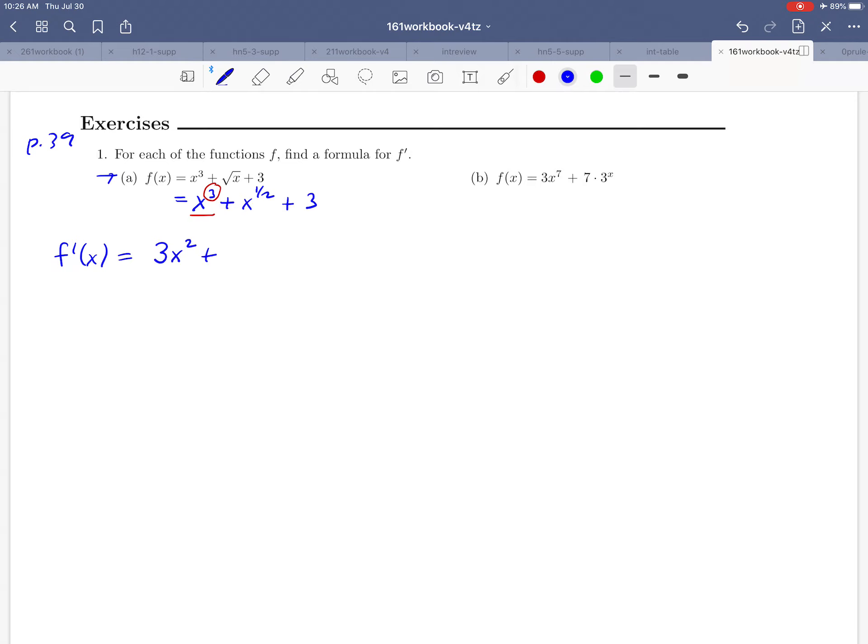and then x to the one-half, same deal. We're raising x to a constant power, and so that's going to be the power rule. So we'll bring the one-half down, one-half x, subtract 1 from the power. That's going to be one-half minus 1. You might be able to do that in your head, and that's okay.